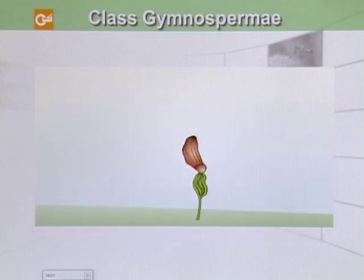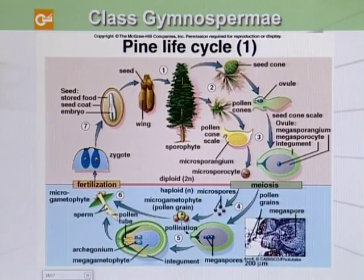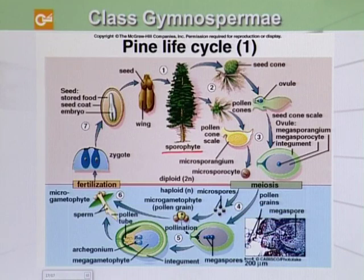On the formation of favorable conditions, the seed develops into a seedling. We can also summarize the whole procedure by looking at a diagram. We can see that this is the sporophyte, and this is a seed cone.